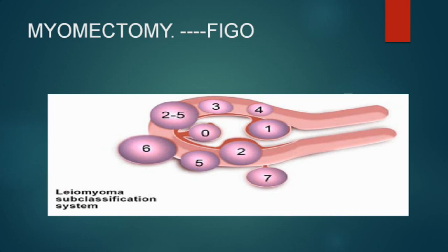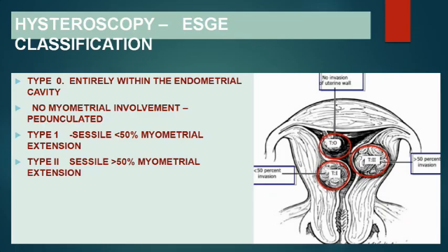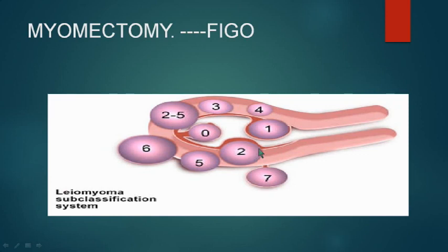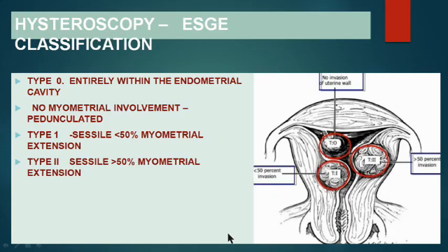As we discussed myomectomy in the last lecture, I have to emphasize that for myomectomy we take the FIGO classification, and for hysteroscopy we take the European classification. For type 0, which is entirely within the endometrial cavity with no myometrial involvement, that is a pedunculated fibroid. Type 1 is sessile with less than 50% myometrial extension, and type 2 is sessile with more than 50% myometrial extension. For hysteroscopy we follow this classification.